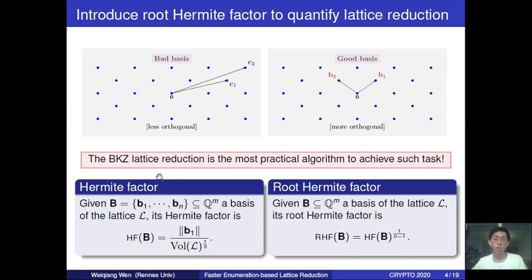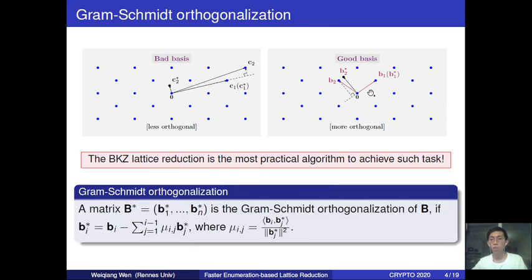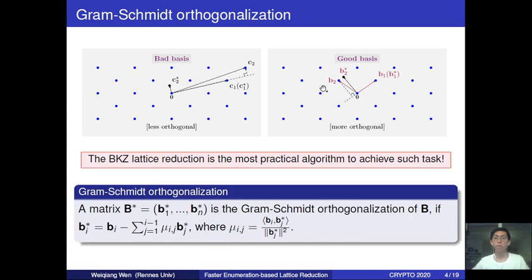If you are further interested in the concrete effect of a lattice reduction, you can look into the Gram-Schmidt orthogonalization of the basis. Intuitively, lattice reduction helps to reduce the basis such that the Gram-Schmidt vectors B1* and B2* have norms closer to each other than before—closer than the norms of C1* and C2*. I will recall the BKZ lattice reduction algorithm and then see how it differs from our new algorithm.